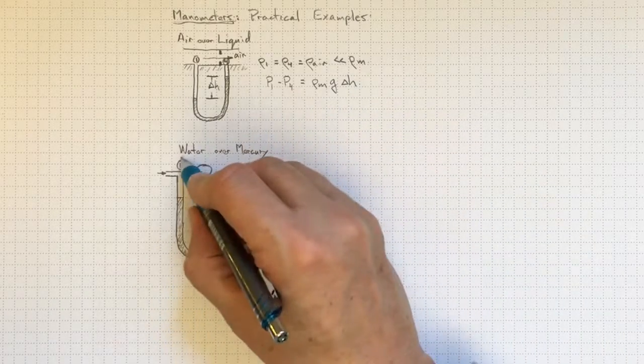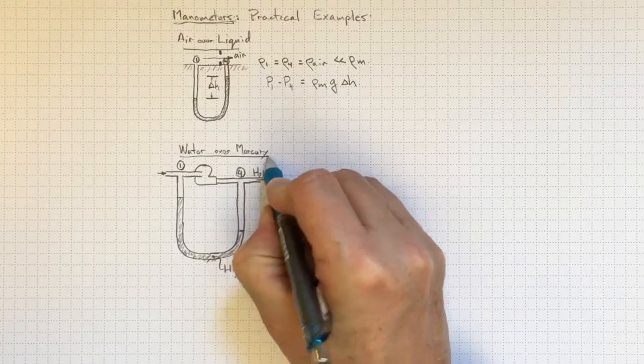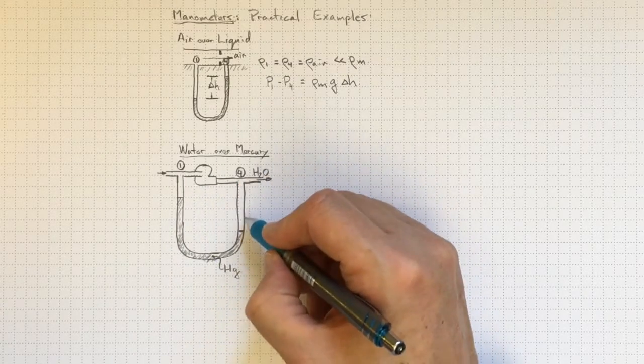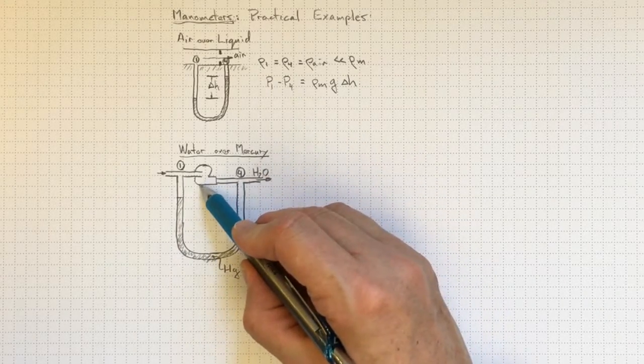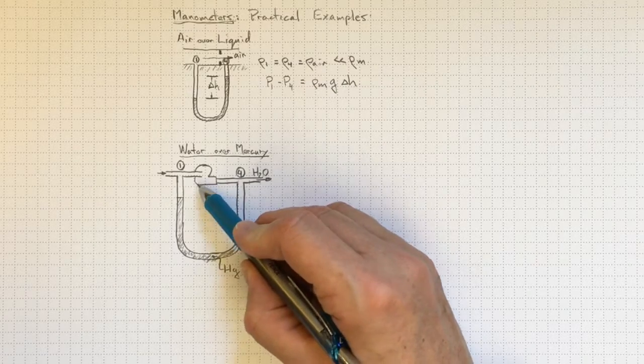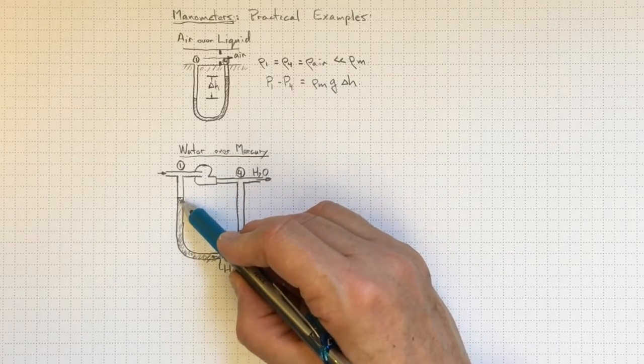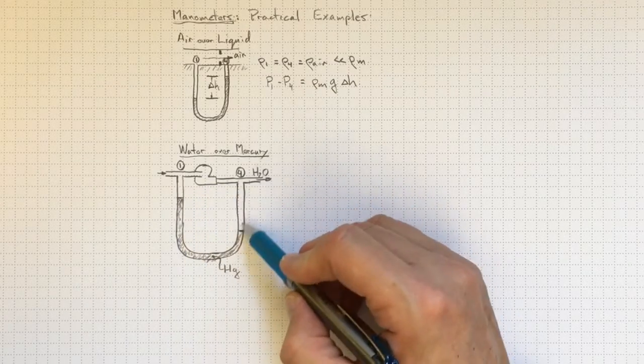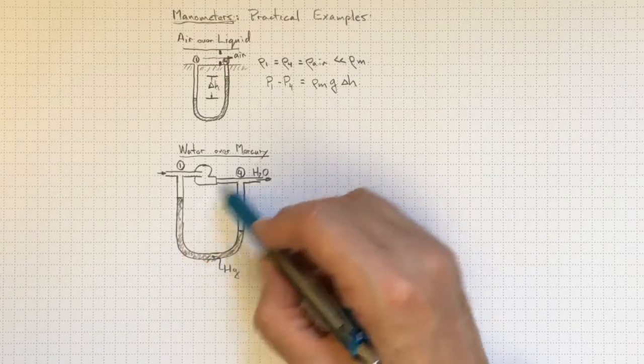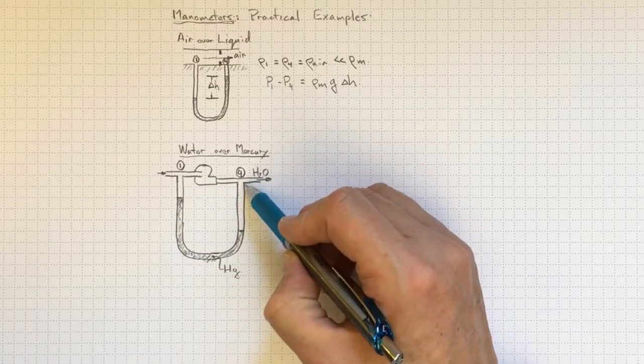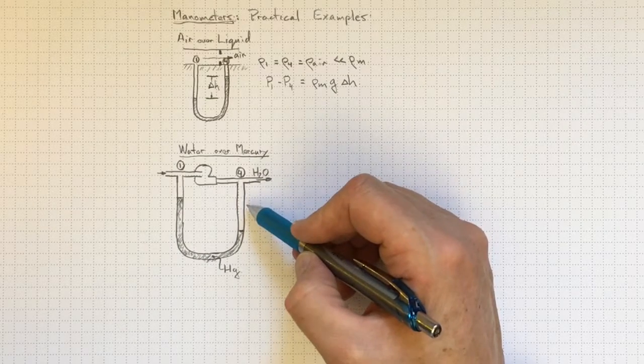Another example that's not so common anymore is water over mercury in the manometer. And this was often used to measure the performance of pumps because the density of mercury being very high allows us to have a moderate-sized manometer that can still measure the increase in pressure across a typical water supply pump.